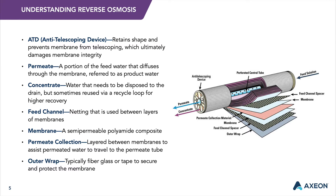In operation, the feed water enters the face of the element through the feed spacer channels and exits on the opposite end as concentrate. A part of the feed water, typically 10 to 20 percent, permeates through the membrane into the leaves and exits the permeate water tube. When elements are used for high permeate production rates, the pressure drop of the permeate flow inside the leaves reduces the efficiency of the element. Element construction is relevant because it also optimizes the actual active membrane area, the area inside the glue lines, and the thickness of the feed spacer. Element productivity is enhanced by high active area, while a thick feed spacer reduces fouling and increases cleaning success.